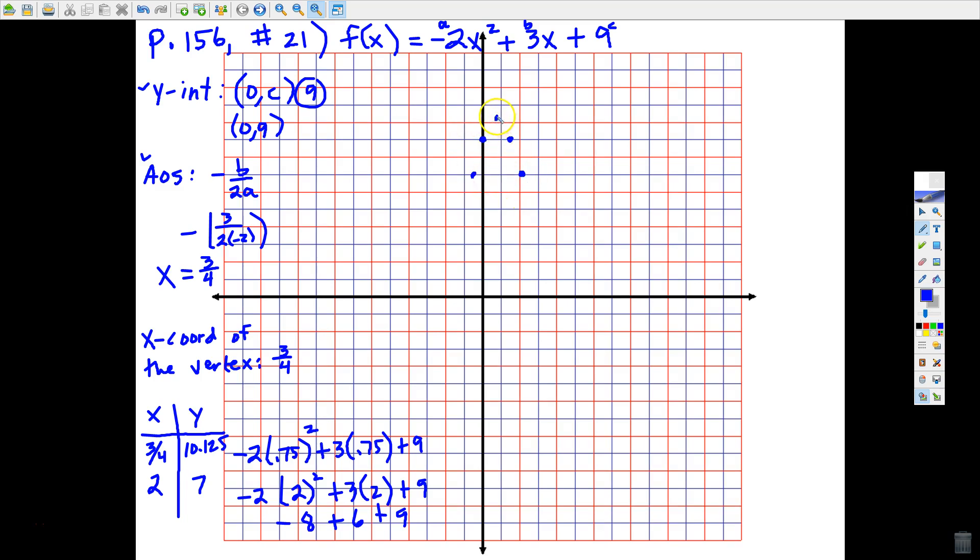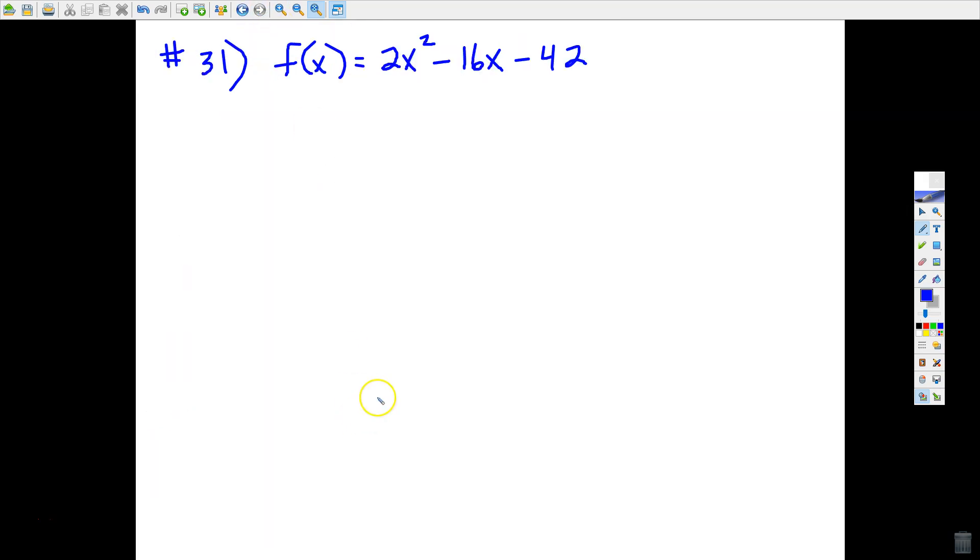So that takes care of all the points I need for this parabola. I just connect those dots, and I notice that it does open down, which matches what we learned about the A term being negative. That should flip the parabola upside down. And that is your final answer for problem number 21.